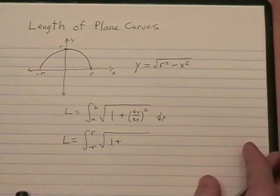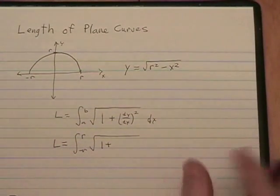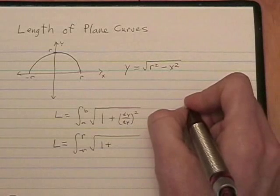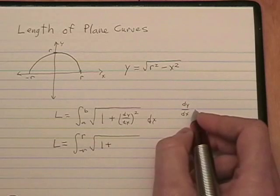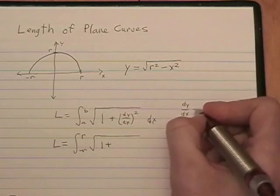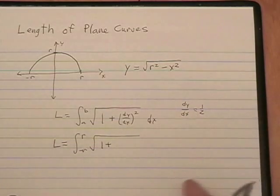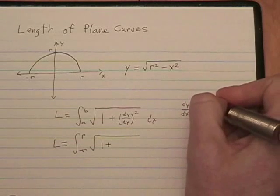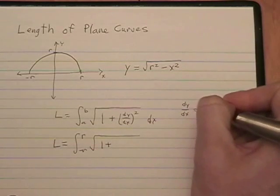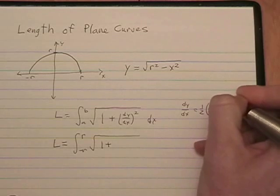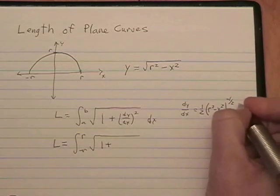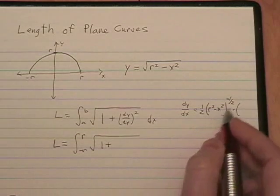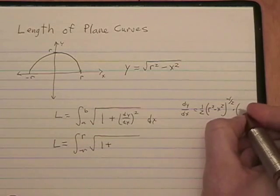So, I'm going to calculate that over here on this side. The derivative of this is, using the chain rule, 1 half times r squared minus x squared to the negative 1 half times the derivative of this inside, which is negative 2x.